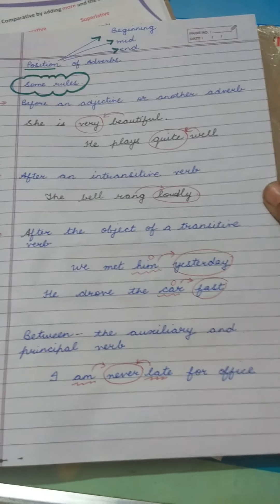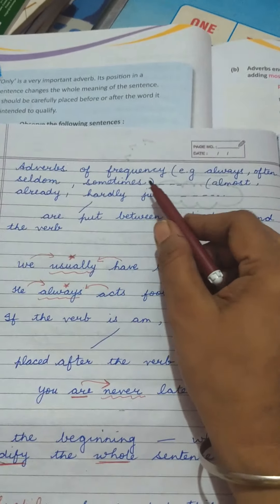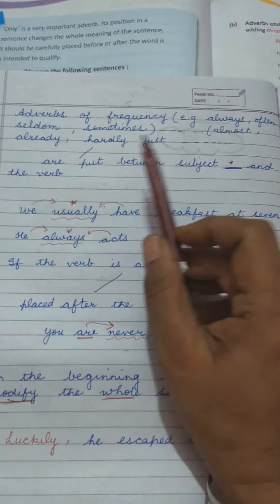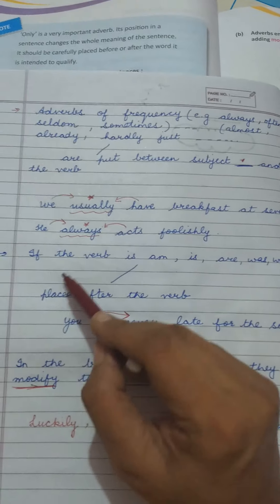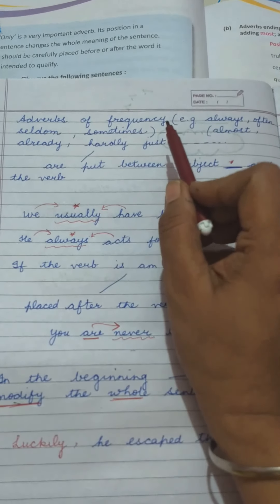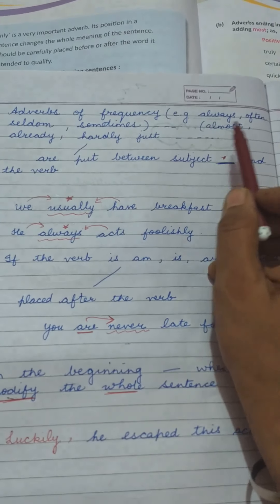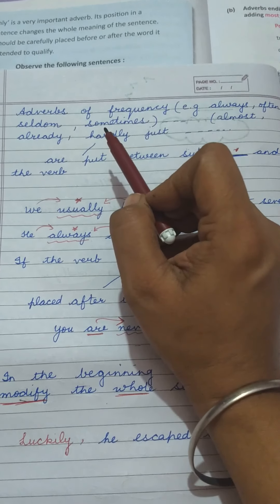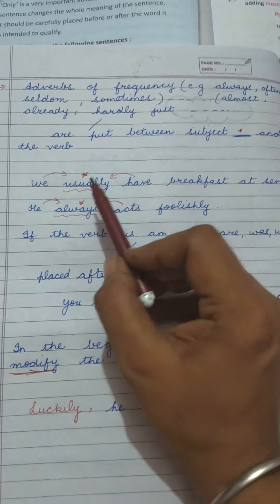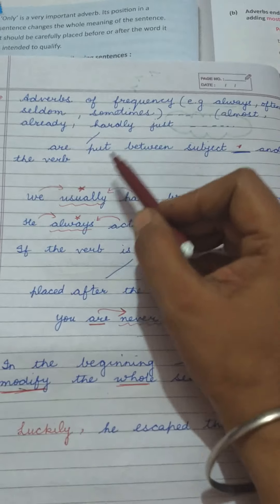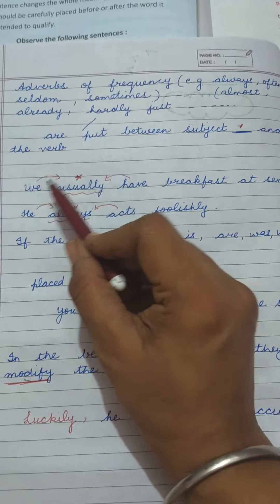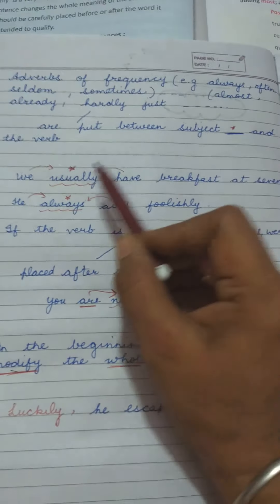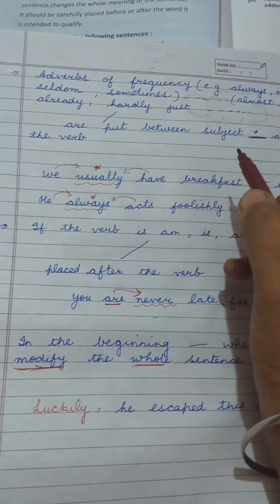The fifth rule concerns adverbs of frequency — like 'always,' 'often,' 'seldom,' 'sometimes,' 'almost,' 'already,' 'hardly,' 'just,' and others. These adverbs answer the question 'how often.' They are placed between the subject and the verb. For example: 'We usually have breakfast at 7' and 'He always acts foolishly.' The adverb of frequency sits between the subject and the verb — that is why I marked it with a star.